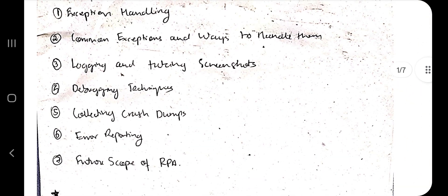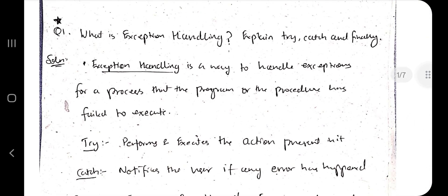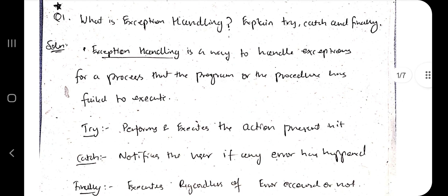The first topic is exception handling. What is exception handling? Explain try-catch and finally. Exception handling means you are handling exceptions. Exception means if you are performing something and you are not getting something which you are expecting. You will be performing some action and if you are not getting the results accordingly, there is some error in that. How to handle that error is what is called exception handling.